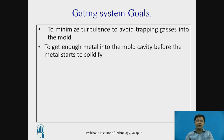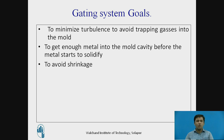The second goal is to get enough metal into the mold cavity before the metal starts to solidify. As we know, shrinkage occurs for all metals during solidification. Therefore, one of the goals of the gating system is to provide enough metal to the casting before it starts to solidify, and to avoid shrinkage.